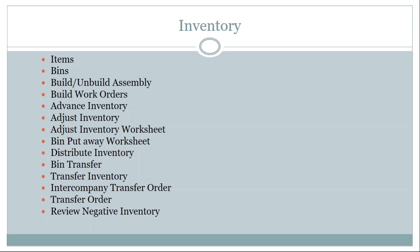Inventory management covers item configuration setup in NetSuite. Once enabled, you can create your own items and either sell them or purchase them from vendors. Inventory operations include bin management, creating assembly builds, work orders, advanced inventory, adjusting inventories, and worksheets. Once we have a NetSuite account, we'll demonstrate how to create items, adjust inventory, distribute inventory, set up bins, and create transfer orders — all under item management.